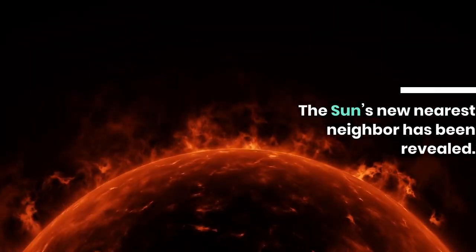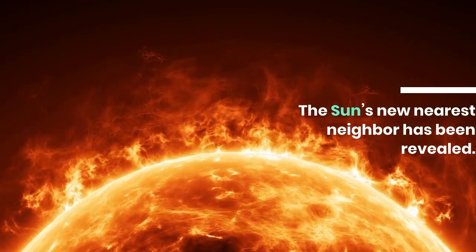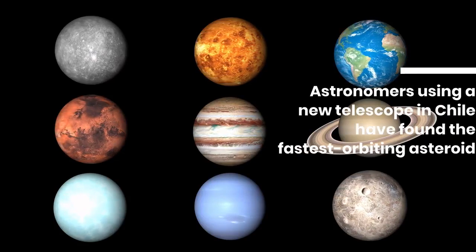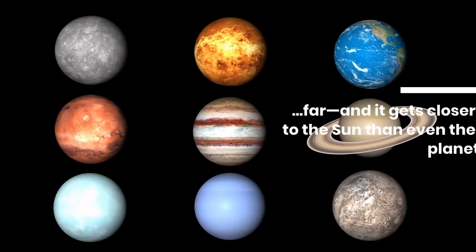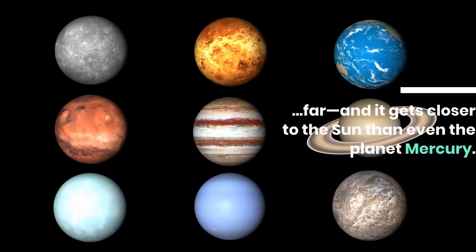The Sun's new nearest neighbor has been revealed. Astronomers using a new telescope in Chile have found the fastest orbiting asteroid so far, and it gets closer to the Sun than even the planet Mercury.